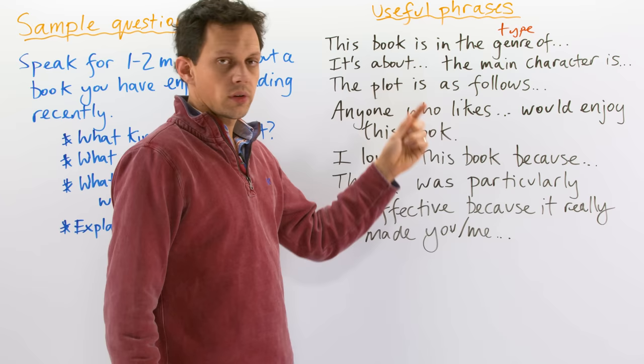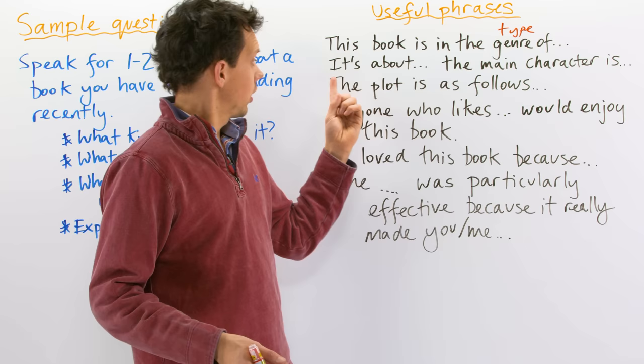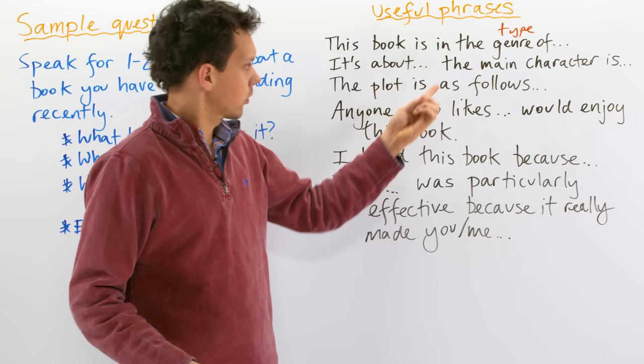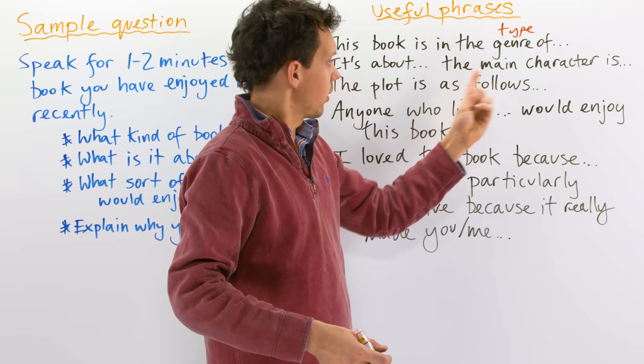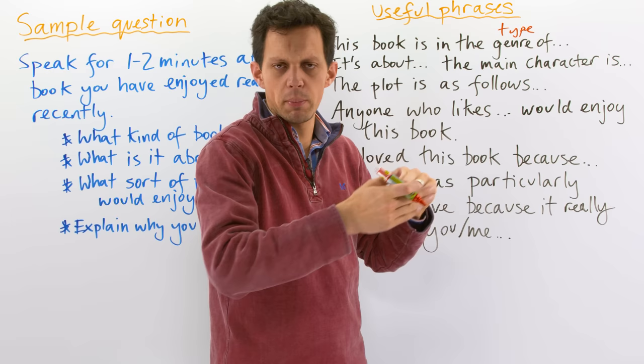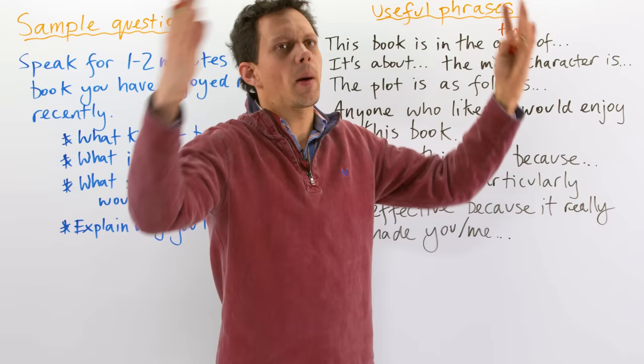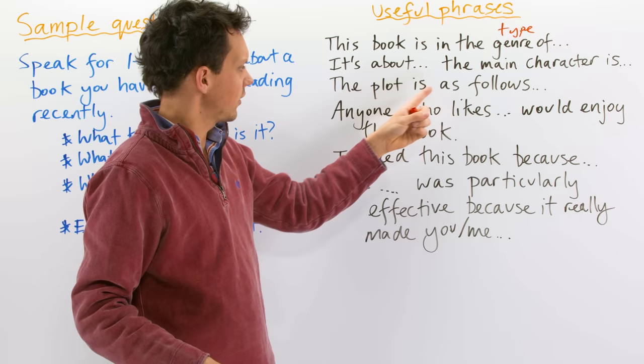It's about... Then roughly say what the book is about. For my story, it's about a woman who gets fed up with her husband. The main character is... Say something about the main character. The main character is called Mary Maloney. She is a very particular, she's a very careful type of character, but eventually she erupts into violence. Like a volcano, you know, she erupts.